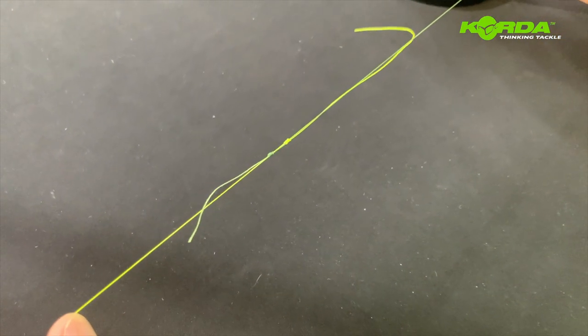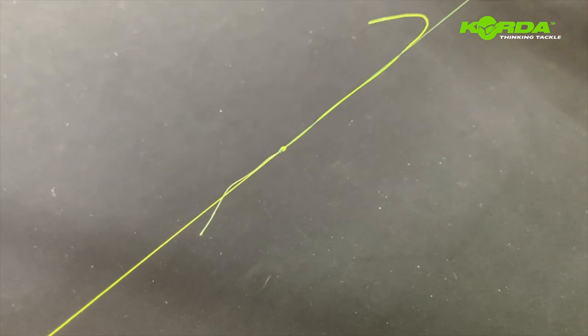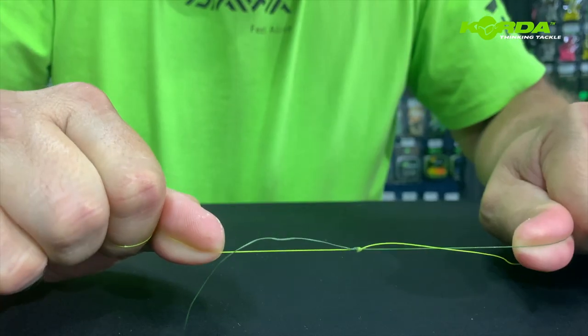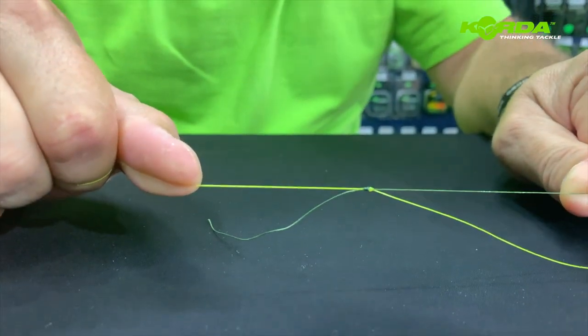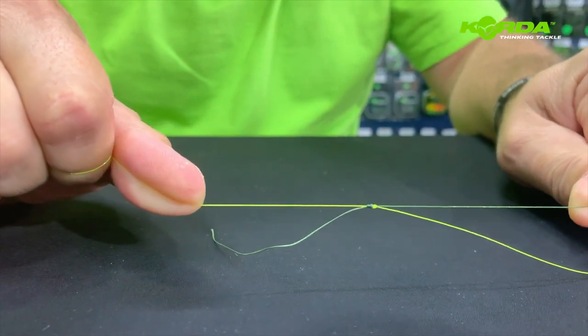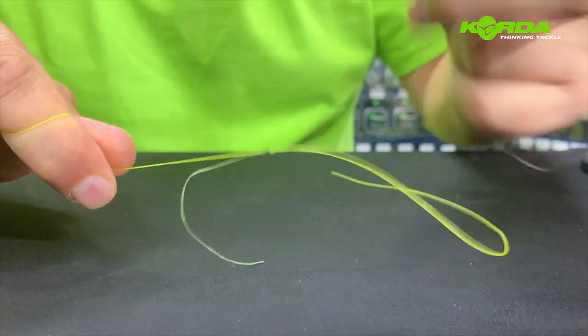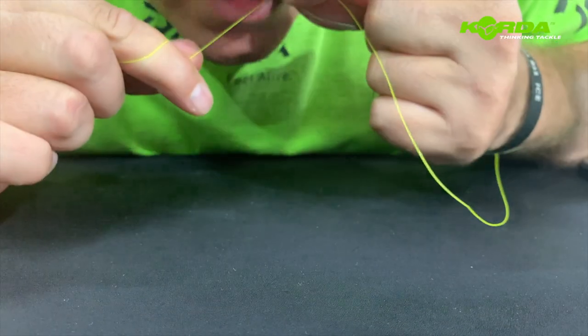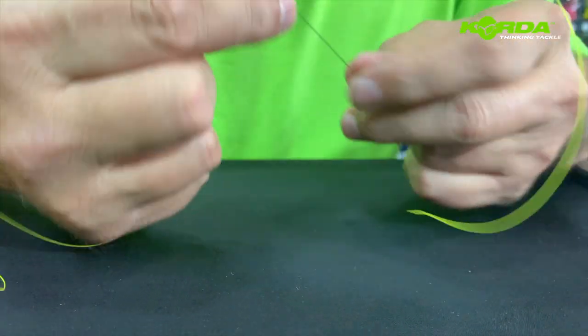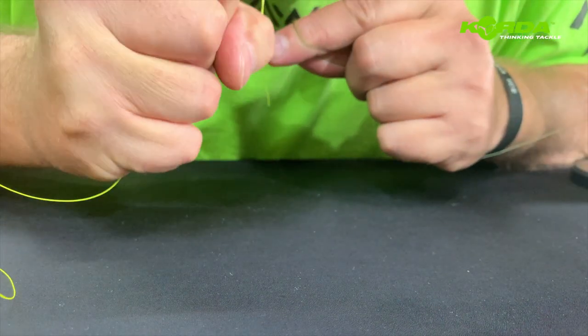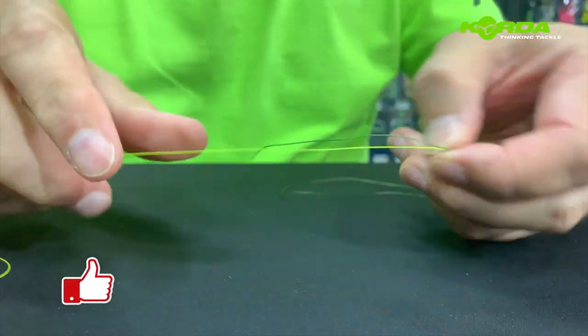Pull the two knots together like that, then set the knot. All I need to do is pull tight on the braid and pull tight on the mono, then cut off the tag ends.